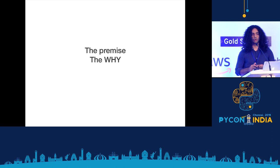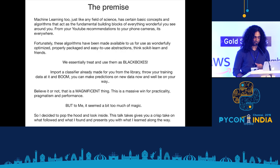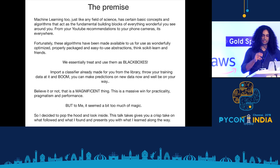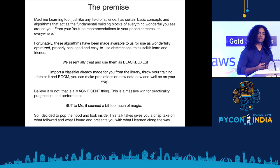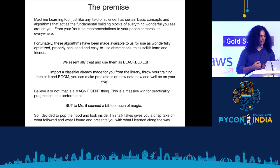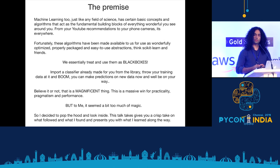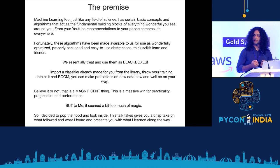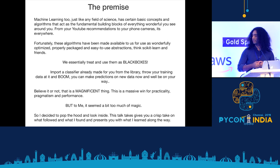So let's start with a why. Machine learning, just like any other field of science, has certain basic concepts and algorithms that act as the fundamental building blocks of everything wonderful that you see around you — from your YouTube algorithms to your phone's camera. It's everywhere. Fortunately, these algorithms have been provided to us as wonderfully packaged, optimized and easy to use abstractions — things like scikit-learn and friends. But we essentially use them as black boxes.